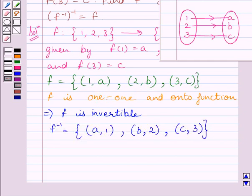Now we know if a function is bijective then its inverse is also bijective. So f inverse is bijective. So it is also invertible.